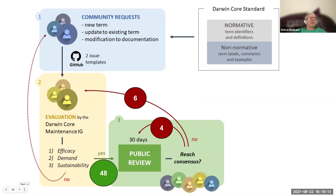Some proposals are deemed too complicated either during the pre-review phase or as a result of public review. These proposals are likely to be recommended by the maintenance group to be delegated to a task group, which would develop them more fully. Task groups are an official part of the TDWG process. An example of a complex proposal is the recent one to modify the term 'material sample'. As of yesterday there were 128 comments on the issue, even though the proposal was not part of the public review, and it is going to be worked on by a task group.